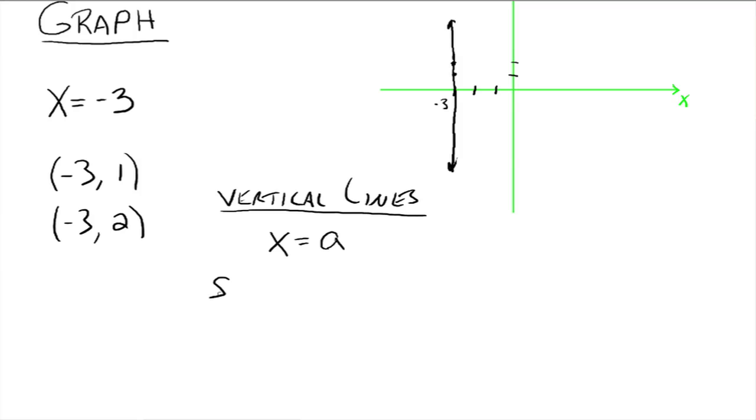What about slope of vertical lines? Let's take these two ordered pairs. We get m equals 2 minus 1 on the top, negative 3 minus negative 3 on the bottom, which goes to 1 over negative 3 plus 3, which goes to 1 over 0.